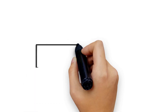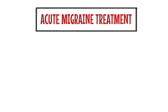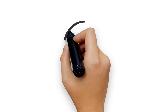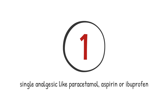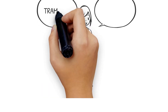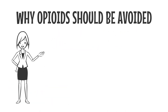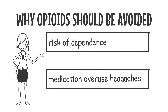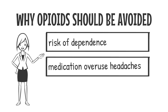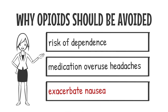Moving on to treating an acute migraine. Initial treatment includes a single analgesic like paracetamol, aspirin or ibuprofen. Opioids like tramadol or morphine are not recommended because of the risk of dependence, the potential of causing medication overuse headaches, and because they can exacerbate nausea.